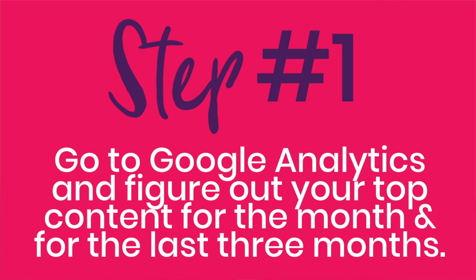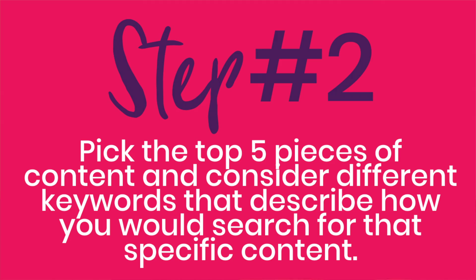Once you have your Google Analytics, you're going to do two searches: one for the last month and one for the last three months. You're going to make a list of the top five for one month and the top five for the last three months. You'll end up with a list of five to ten, depending on how different your months are, of your most popular content. In this example, we're going to use a blog post.